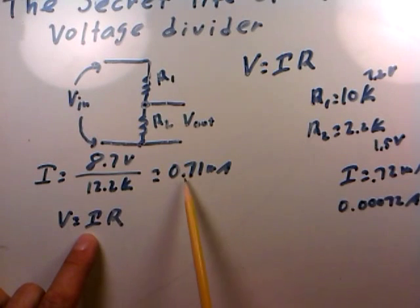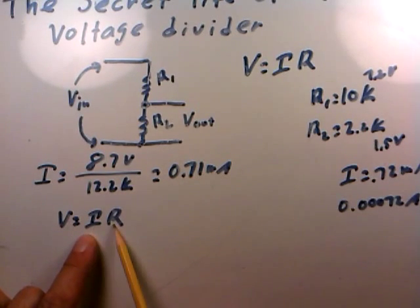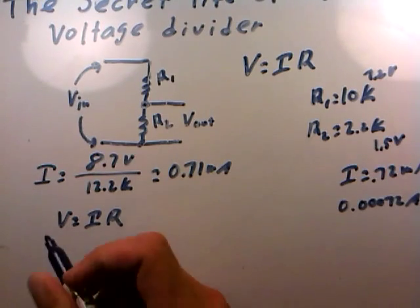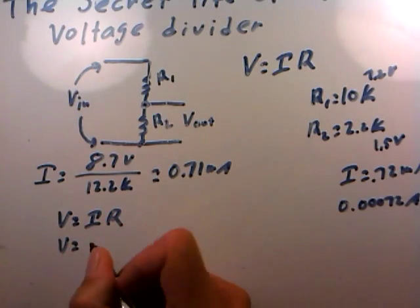If I just multiply the current by the resistance, that'll give me the voltage drop across the resistor at that time. So if I take 0.00071 amps and multiply that by 10,000 ohms, which is the resistance in R1...